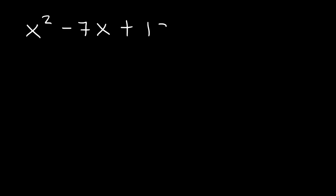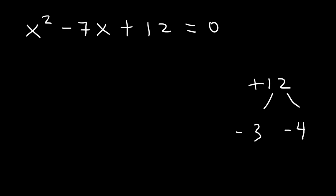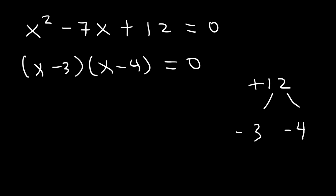Now what about x squared minus 7x plus 12 is equal to zero? What two numbers multiply to 12 but add to negative 7? We know 3 times 4 is 12, and negative 3 times negative 4 is also positive 12, but adds up to negative 7. So this can be factored as x minus 3 times x minus 4, giving x equals 3 and x equals 4.